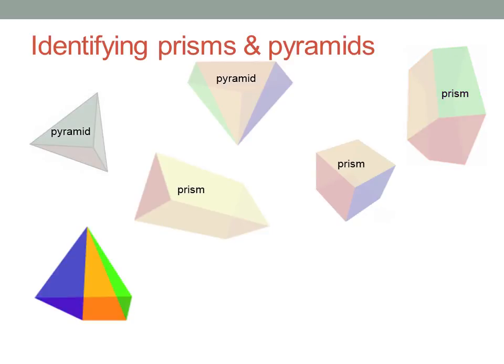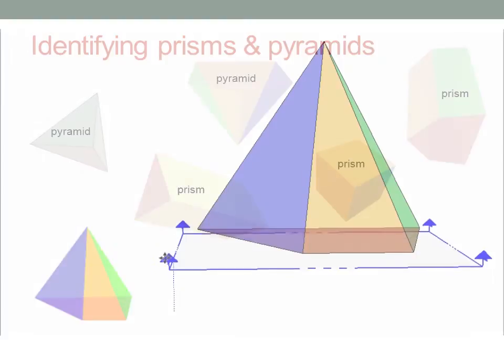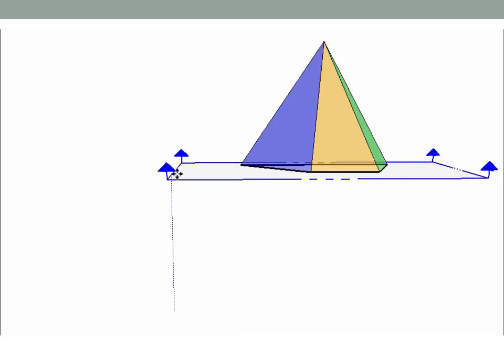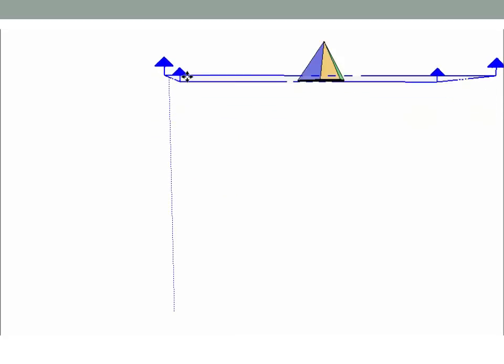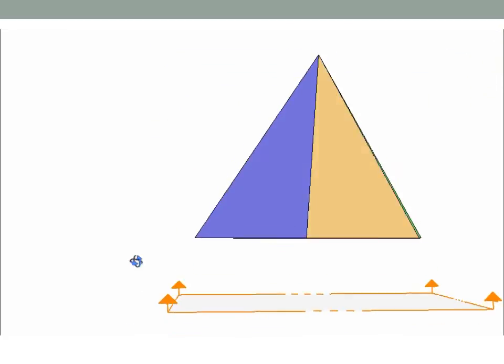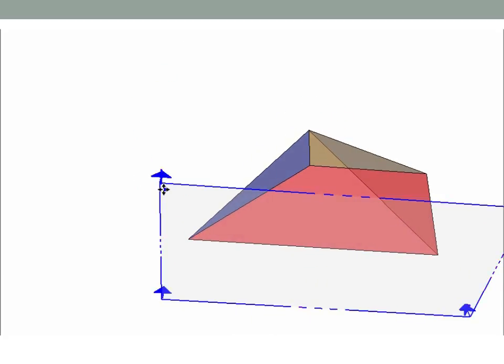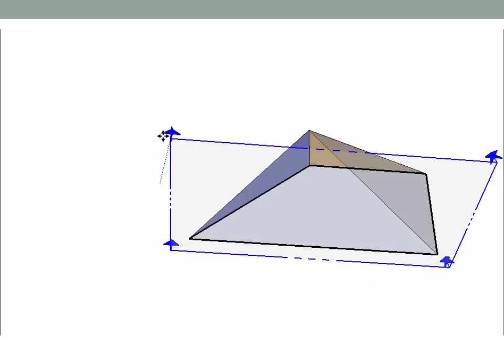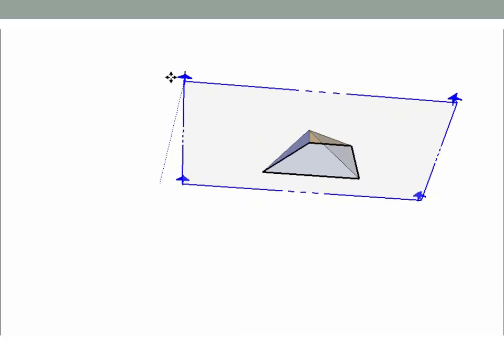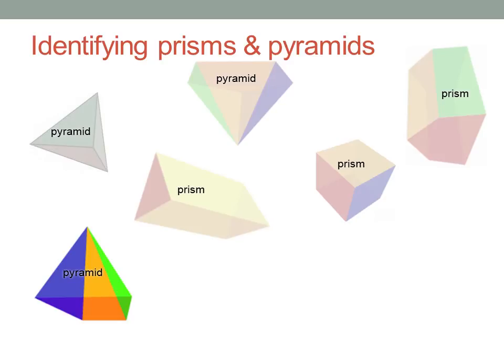This one should be easier, now you've got the idea. Can you see the base? It's getting smaller to a point, so it's a pyramid. What shape is that cross-section? I see two parallel sides. It's a trapezium. This is a trapezium-based pyramid.